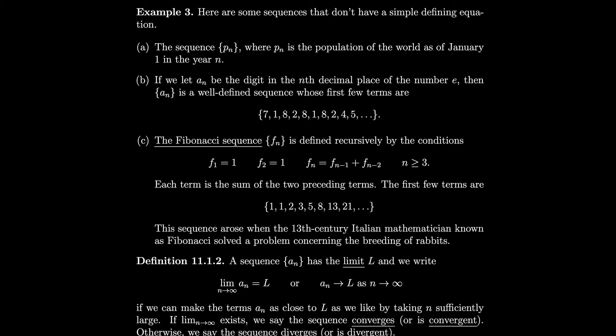Then we have the Fibonacci sequence, defined recursively: the first two terms are both 1, and after that every term is the sum of the two previous ones. So fn = f(n−1) + f(n−2). This gives 1, 1, 2, 3, 5, 8, and so on. This sequence apparently arose in the 13th century when Italian mathematician Fibonacci solved a problem concerning the breeding of rabbits.